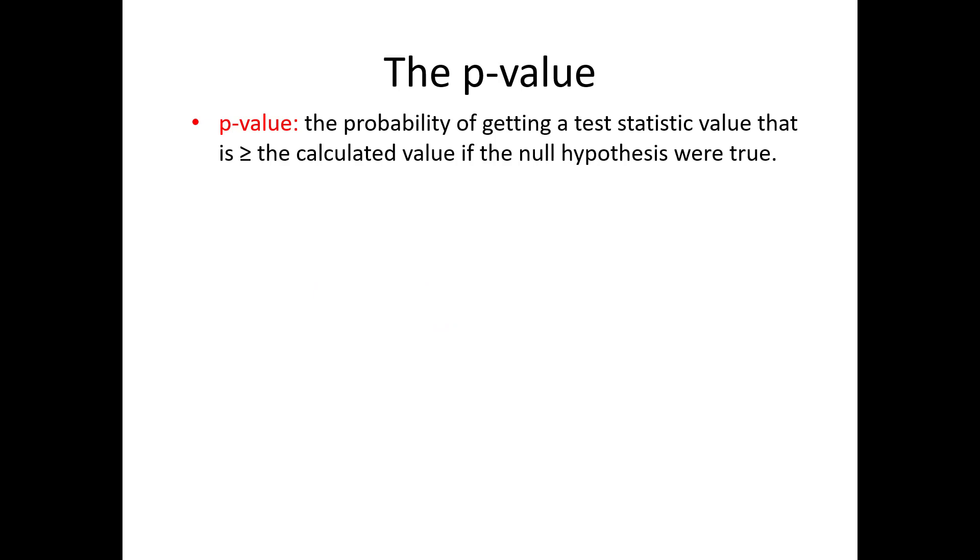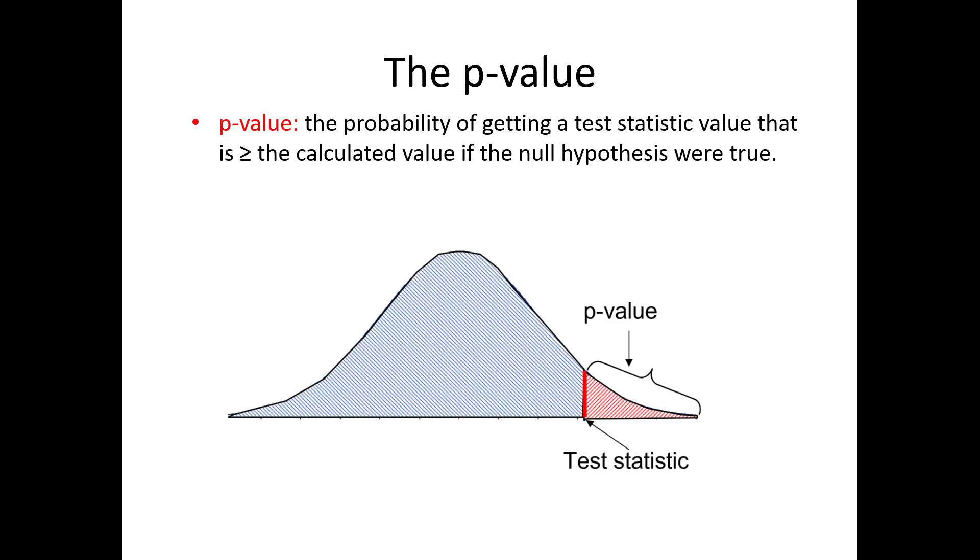The p-value is the probability that you will see a test statistic greater than or equal to what you calculated from the data if the null hypothesis is true. On the graph, this probability is the area to the right of the test statistic.